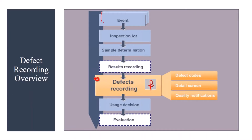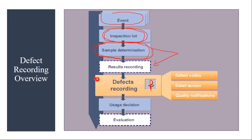So based on certain events in our quality management module, the system will generate an inspection lot — this we have covered in our previous sessions. Then there will be sample determination and sample quantity calculation. After that, the physical inspection will happen. Then the analyst will come to the system and do the results recording. During results recording, if there is any failure or if any characteristic is not as per the limits, then we have the option of doing the defect record.